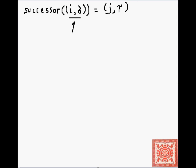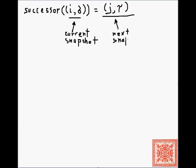We take the snapshot (i, σ): the current snapshot where i is the number of the instruction in the L program about to be executed, and σ is a program state — the state of that program. We then compute the successive snapshot (j, τ), which we'll call the next or successor snapshot. j is the next instruction to be executed, or possibly the terminal snapshot — the number after the last instruction of the program. τ is the next state, which is possibly equal to σ because we may not make any changes in the program state by executing the i-th instruction.